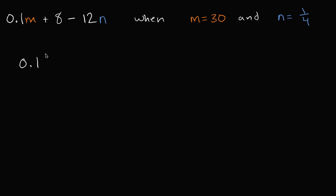So this is going to be equal to 0.1 times m, m is 30, times 30 plus 8 minus 12 times n where n is 1 fourth.